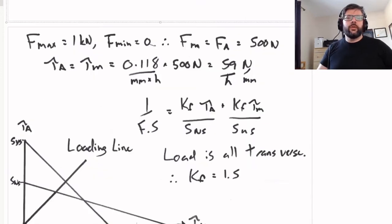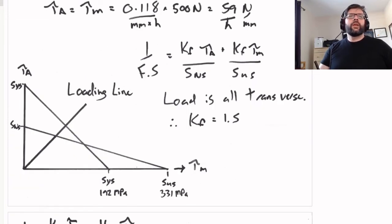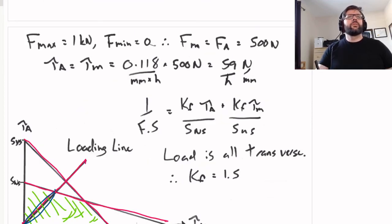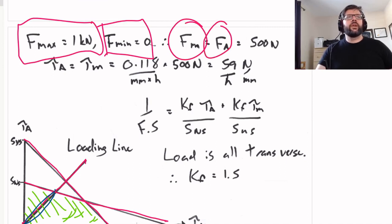We can draw our Goodman diagram here. We're varying our load from 0 to F, 0 to some value. In that situation, the loading line is just a straight line with slope of 1. We've got our SYS line, our SNS and SUS line, so our failure envelope is here. That means our safety factor is based upon this line segment. With F max of 1 kilonewton and F min of zero, the amplitude and mean of the force are the same thing: 500 newtons.